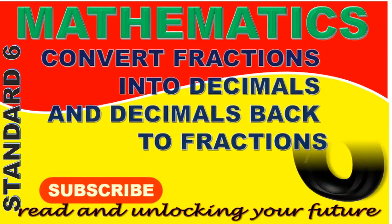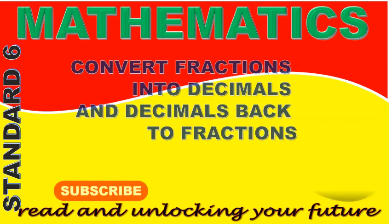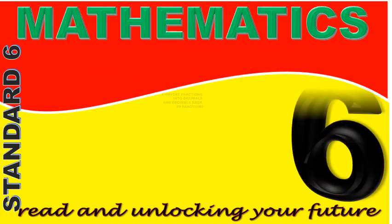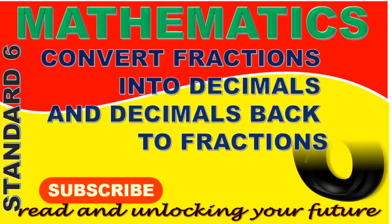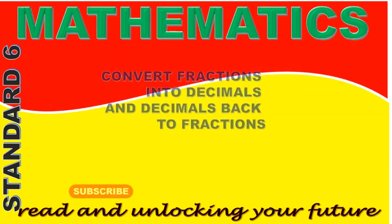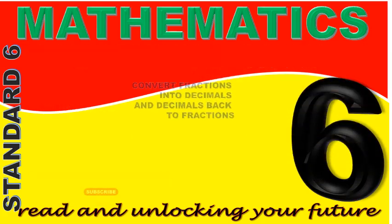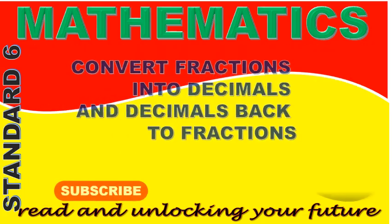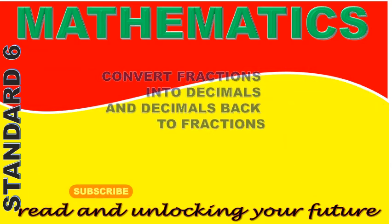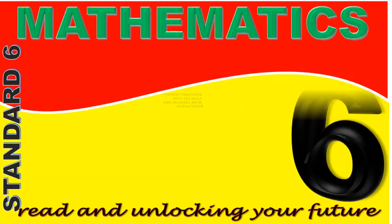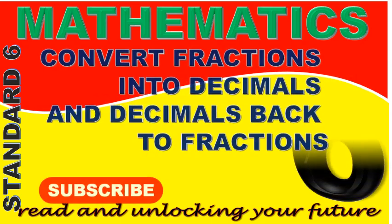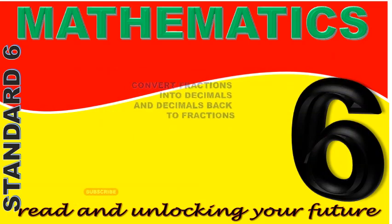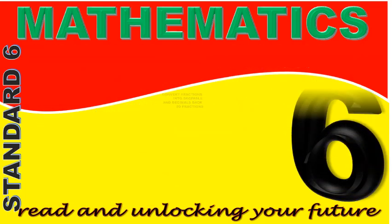We also learned that a fraction can be changed into a decimal by dividing the numerator by the denominator. Mark, how do we convert the fraction 3 out of 8 to a decimal number? We change the fraction 3 out of 8 to a decimal number by dividing the numerator 3 by the denominator 8. This gives us 0.375.